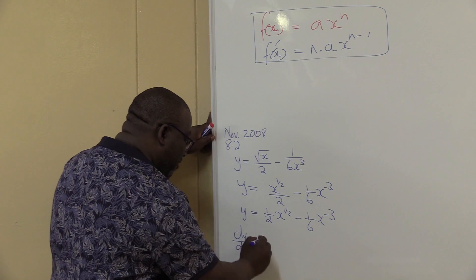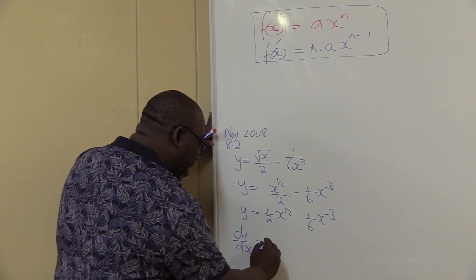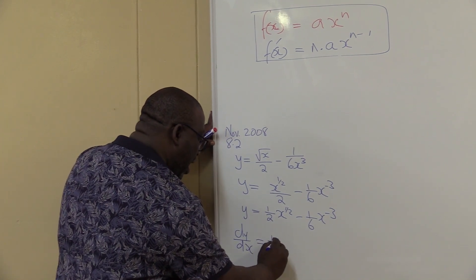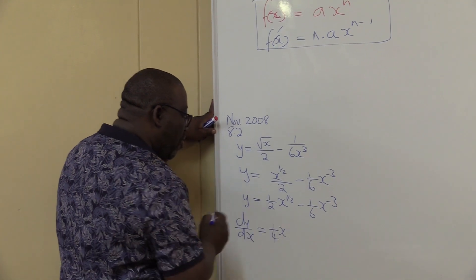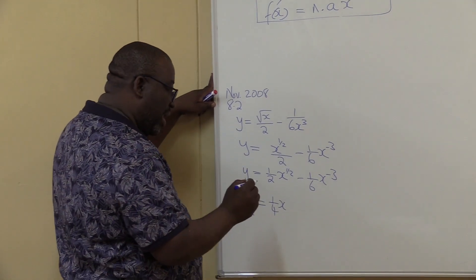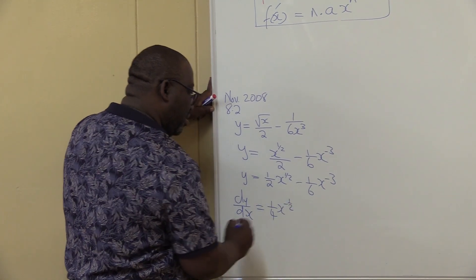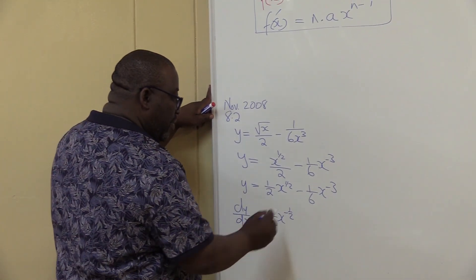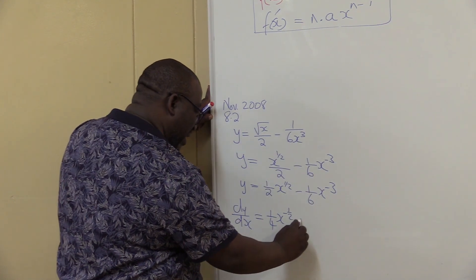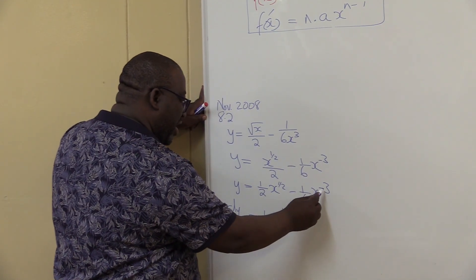So it's going to be half times half, it is 1 over 4. So x to the power, what is half minus 1? It's going to be minus half.